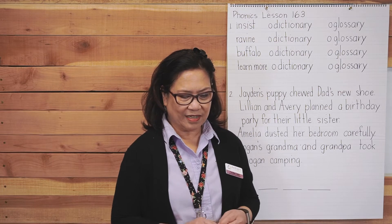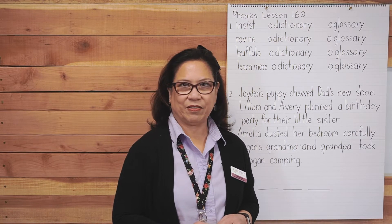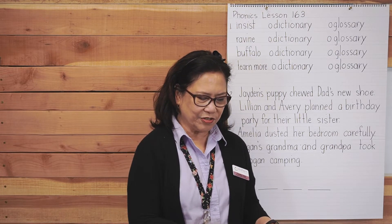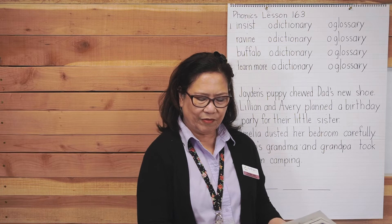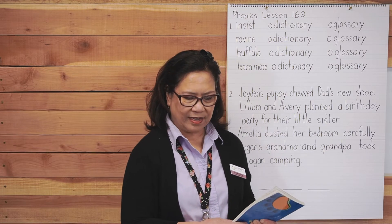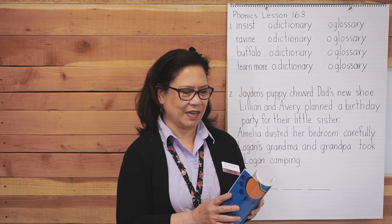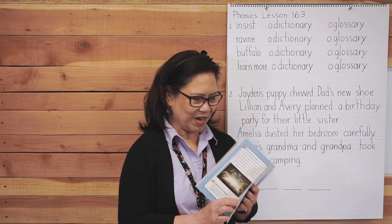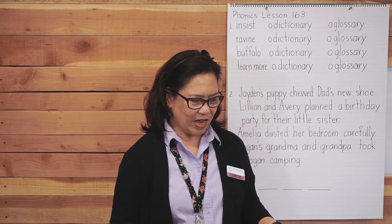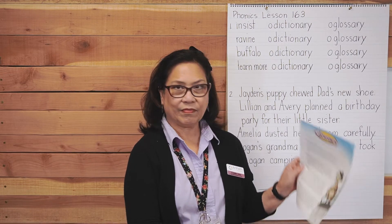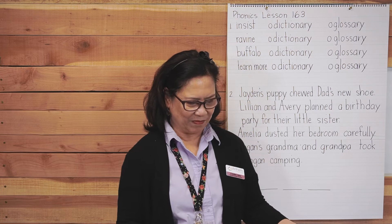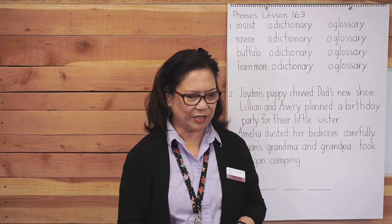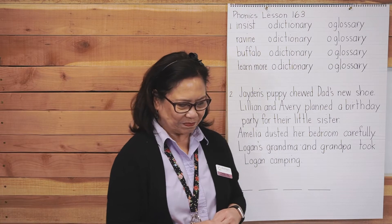A dictionary is a book that contains a list of words and information about each word, and a glossary is usually found in the back section of a book and gives extra information about the words in the book. So remember the glossary I told you about yesterday? It's in the back of a book. And you also have your glossary that I sent home. You will not need them, but I just wanted to make sure that you understood what they were.